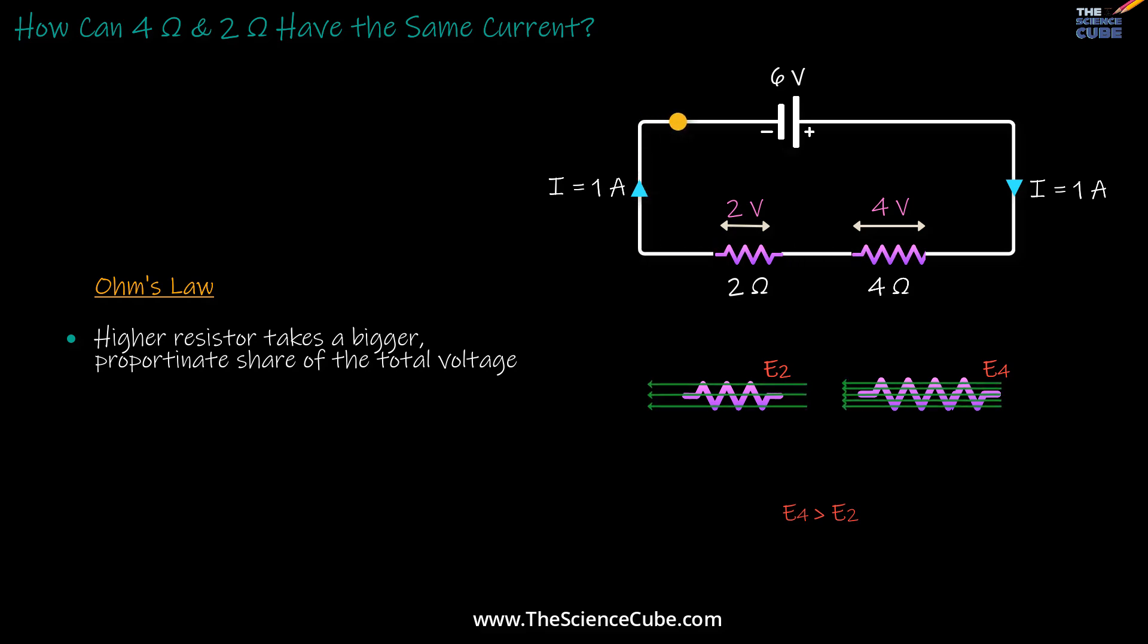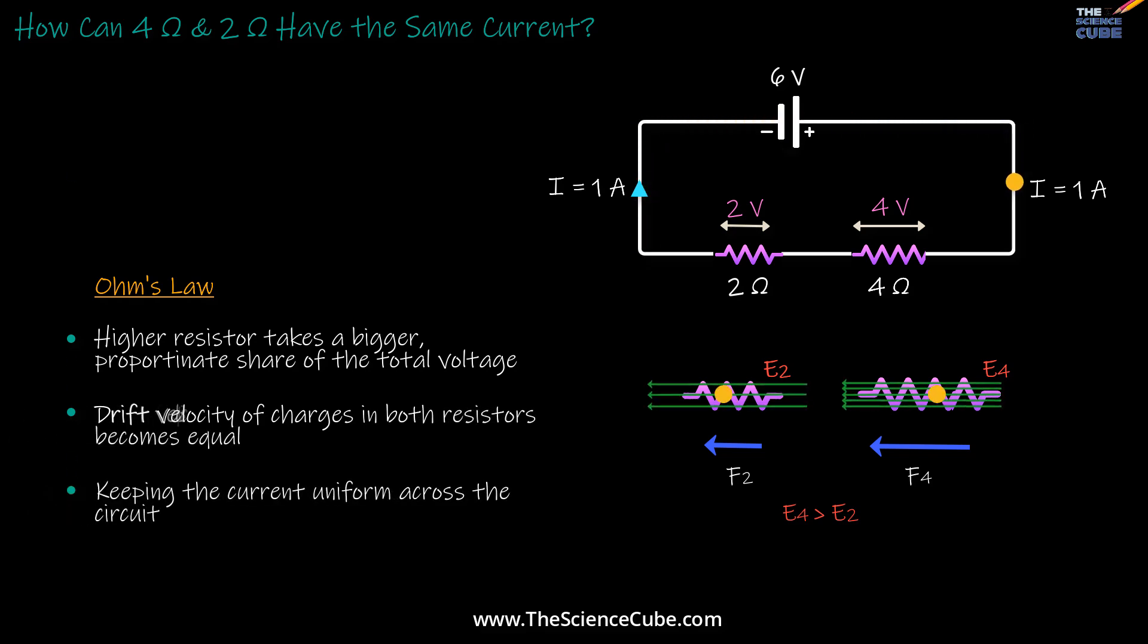Well, it exerts a larger force on the charges passing through that resistor, giving enough of a shove to keep their drift velocity at just the right level, such that the charges move with the same overall drift velocity in both resistors, keeping the current uniform across the circuit.